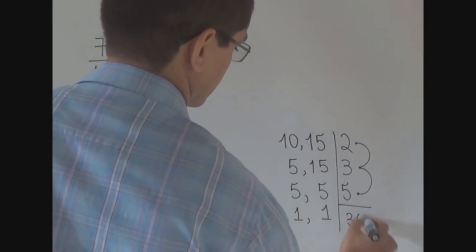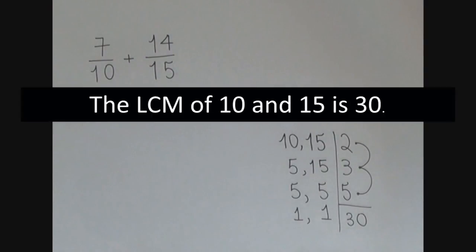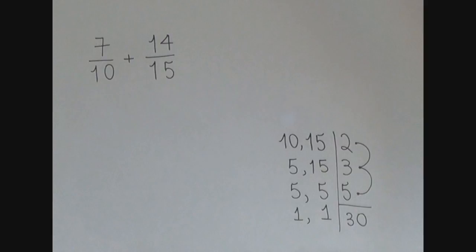So, our LCM is 30. The least common multiple of 10 and 15 is 30. Why did we calculate the LCM of 10 and 15?